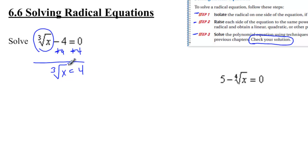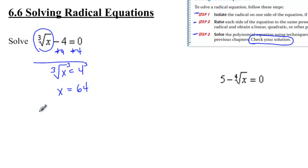How do I undo a cube root? I cube both sides. That's going to leave me with x on the left side and 4 cubed, or 64, on the right side. Now I have to check, so I check by saying the cube root of 64 minus 4 equals 0.